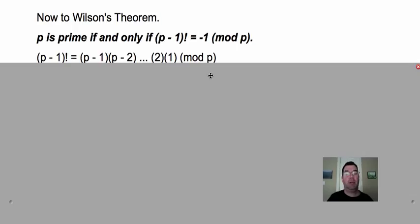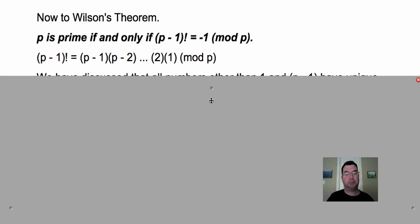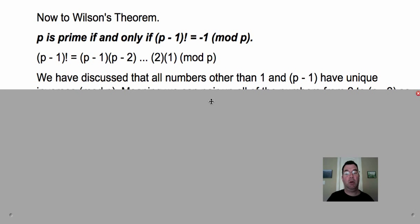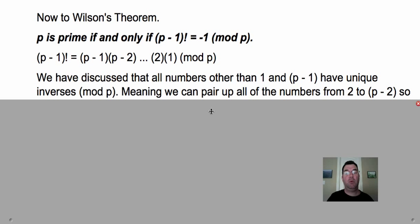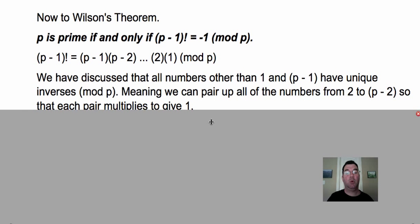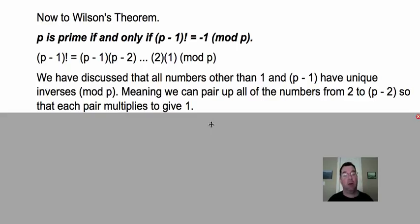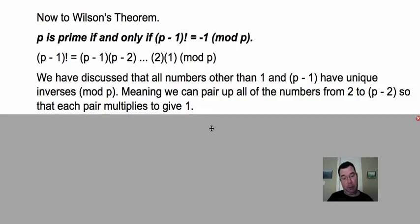So if I write out what (p - 1)! actually is, that's what I get. It's (p - 1)(p - 2)...2·1. And so as I said before, one and p - 1 are the only ones that multiply by themselves to get one. All of the other numbers between two and p - 2 can be paired up with some other number between two and p - 2 so that that pair of numbers multiplies to give one.